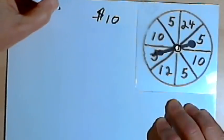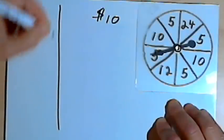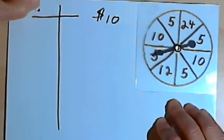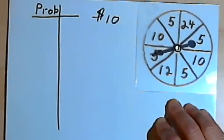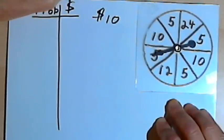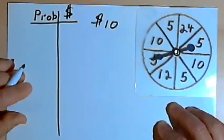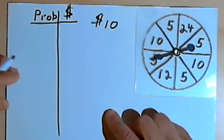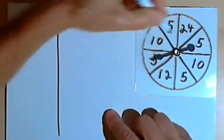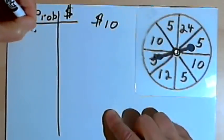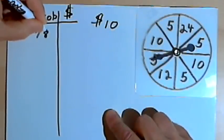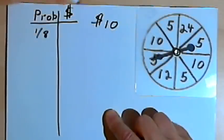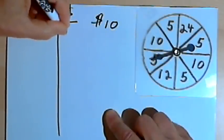I'm going to make two columns so we can record some information. In one column, I'll put the probability of something happening. And in the other column, I'll put what happens. I'll just put a dollar sign for that column, since what happens is you're going to get some money. So for one-eighth of the circle that we're dealing with, you get 24 dollars back.